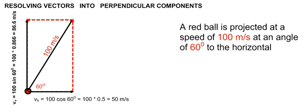The vertical size of the velocity can be found by finding the vertical part of the parallelogram. That is given by 100 sin 60, which equals 86.6 meters per second.